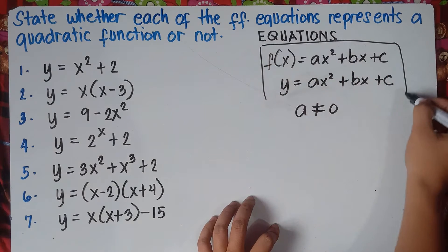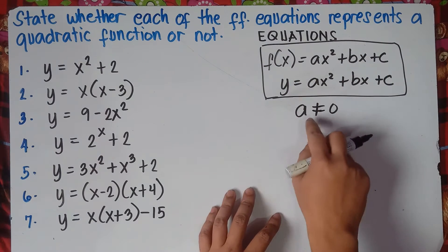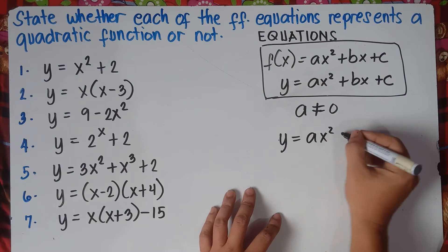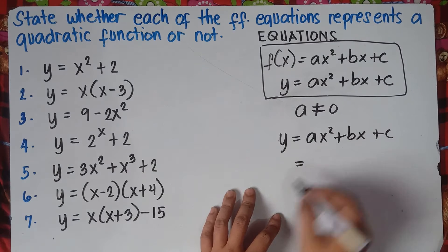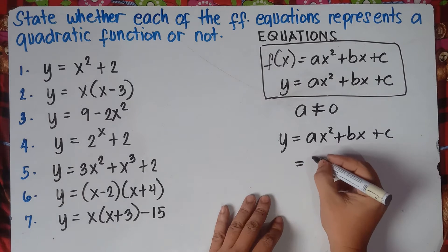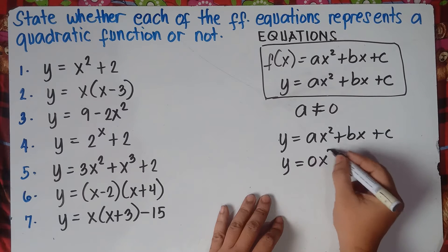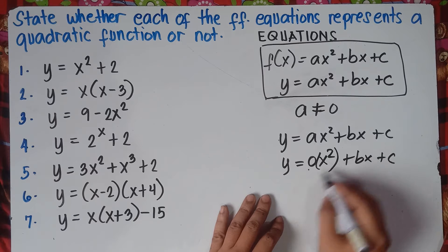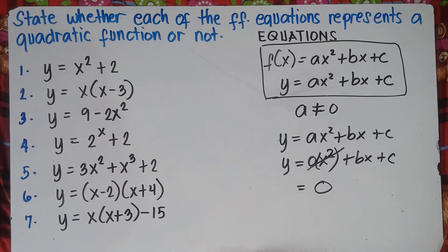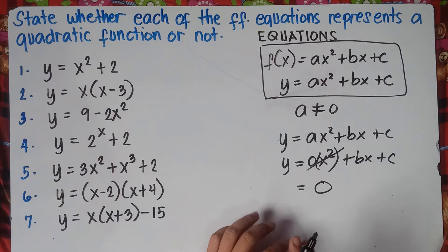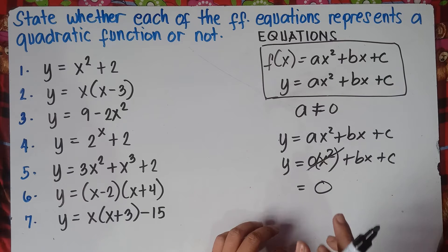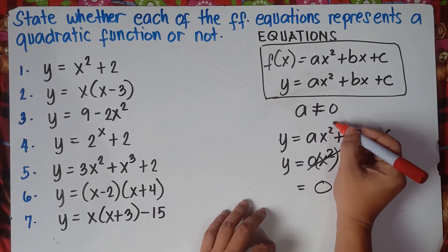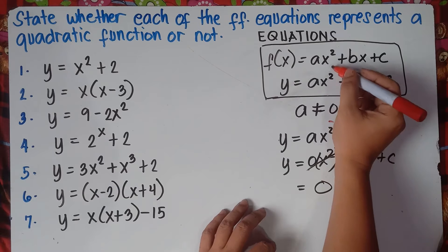Why should a not be equal to 0? Because if a is 0, substitute the value of 0: 0 times x² plus bx plus c — 0 times x² equals 0, so that term disappears. Always remember that in a quadratic function, the highest degree is always 2.